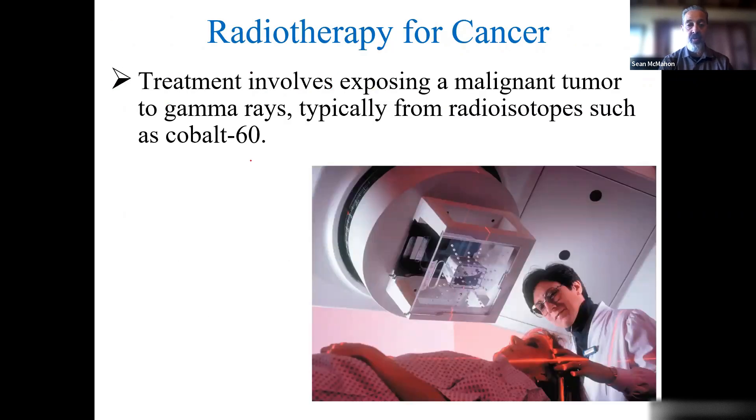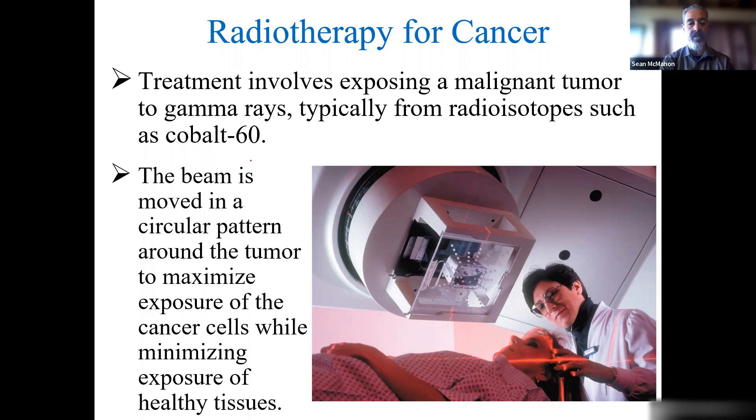Radiotherapy for cancer can be used. This treatment involves exposing a malignant—you can think of benign tumor as not a good tumor, because no tumor is good. But benign means it's not metastasizing, it's not breaking apart and spreading. Benign, you can think bien, bueno—not as dangerous. Malignant, malo, bad. Malignant tumors can be exposed to gamma rays to try to kill them. Using radioisotopes such as cobalt-60, the beam is moved over a very small radius to only expose it to the cancer cell to minimize any damage to the healthy tissues. That's an example of radiotherapy for cancer patients, where we're taking advantage of these radioisotopes that are emitting gamma rays.